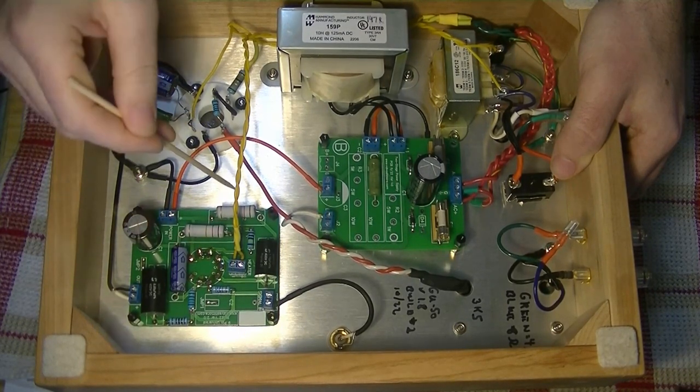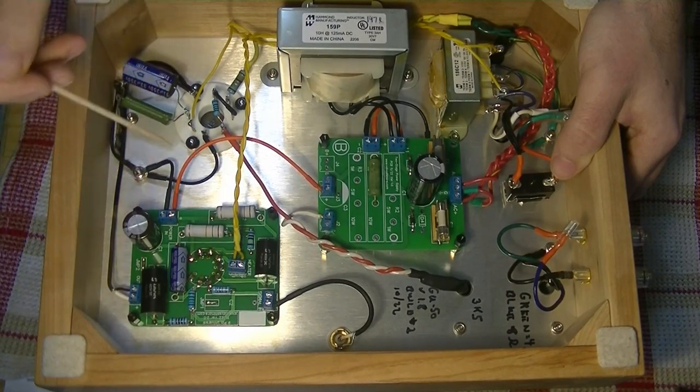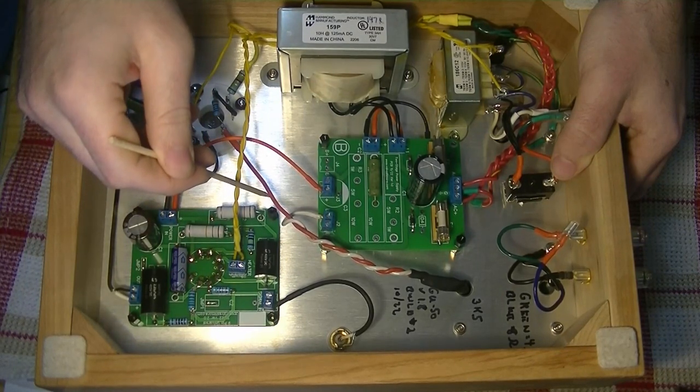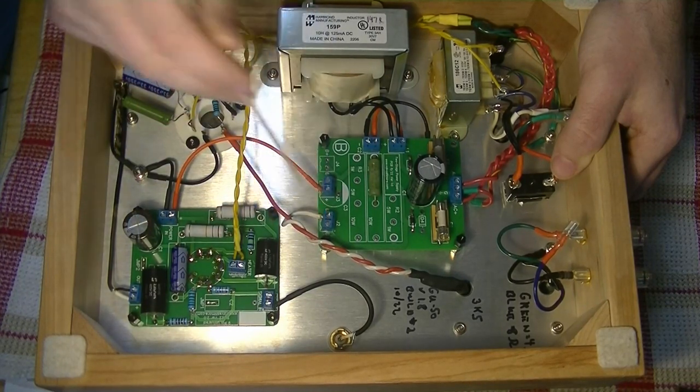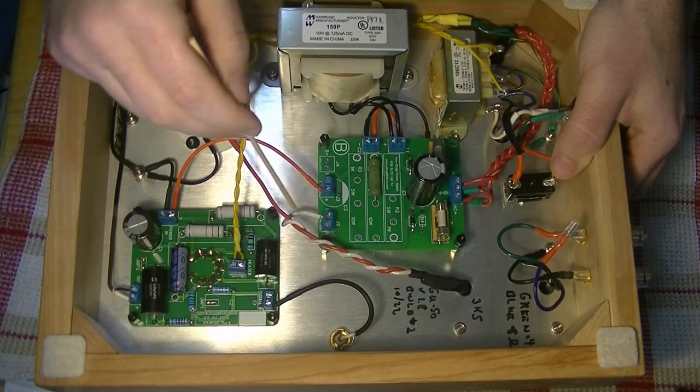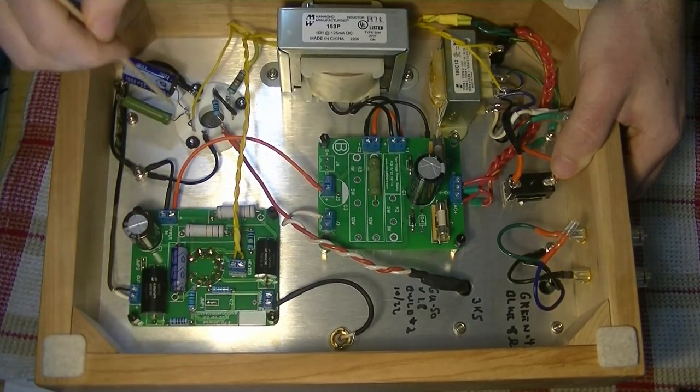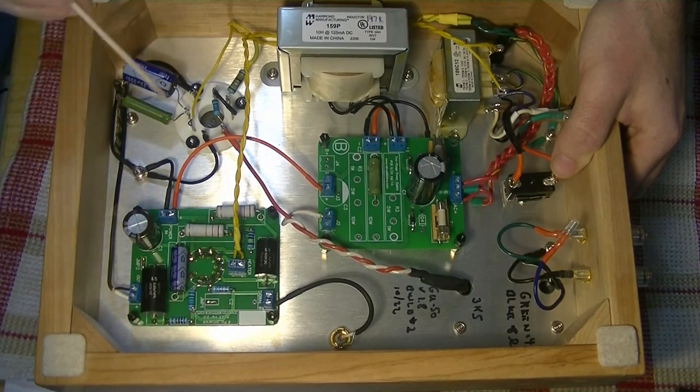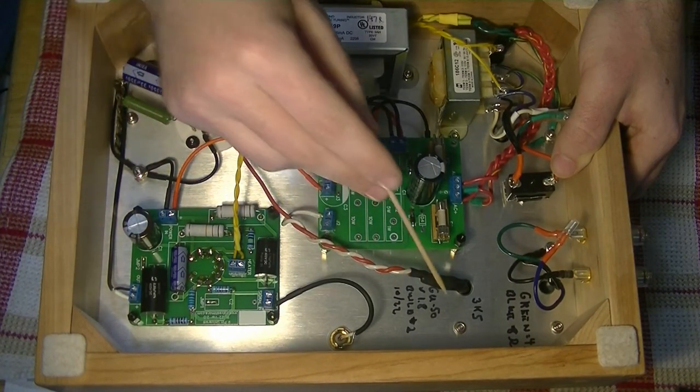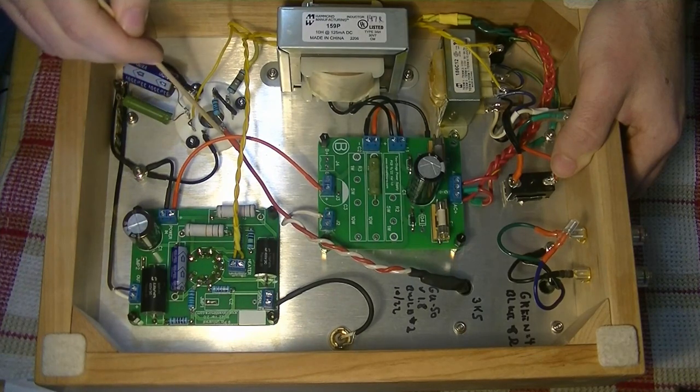Out from the GU50 comes this orange wire right here, and this is the output transformer, and the other side of it is going into the power board because, of course, the output transformer acts as a power plate resistor for the GU50. That's where the load is coming for the tube. So the power goes through the output transformer and then back to the plate of the GU50.